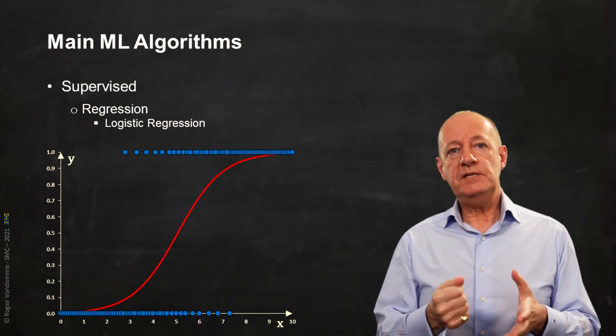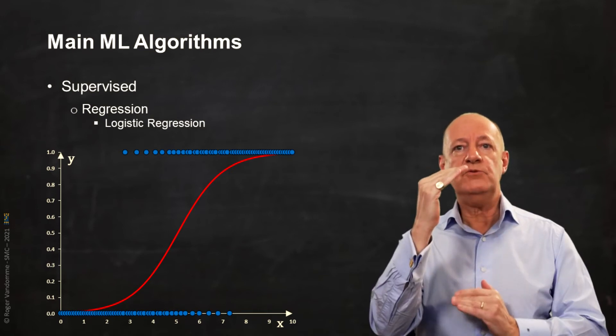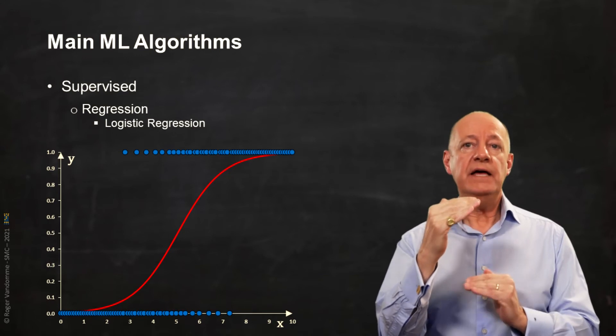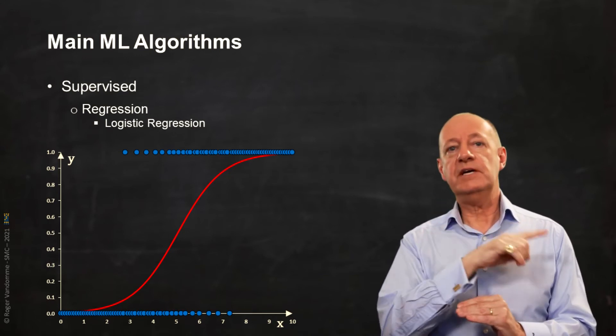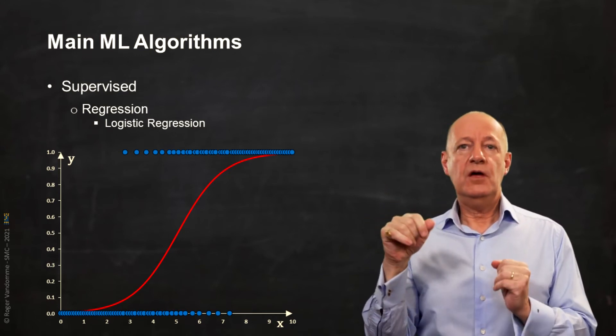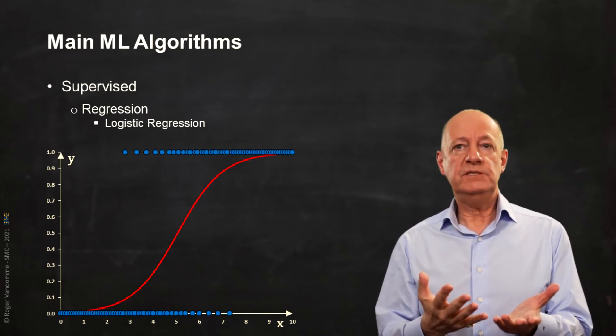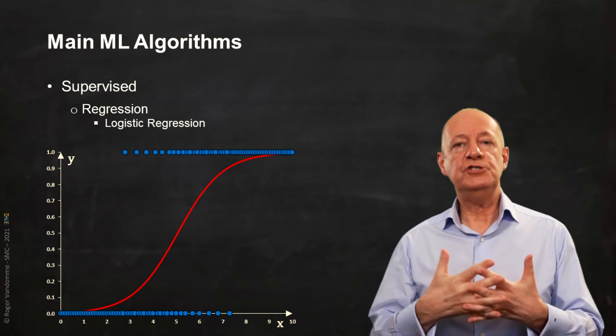So we found a mathematical way to constrain the regression line between the two limit values, and thus we get this characteristic sigmoid. We use for that the natural logarithm of the probability, hence the name of logistic regression.